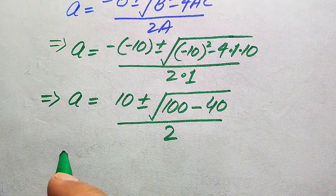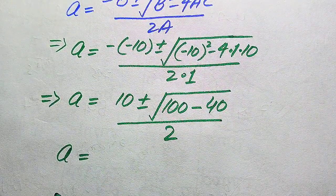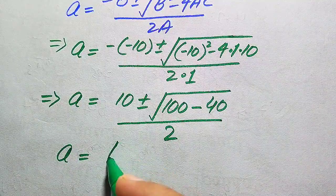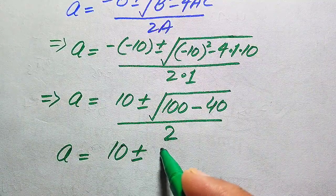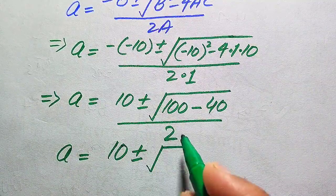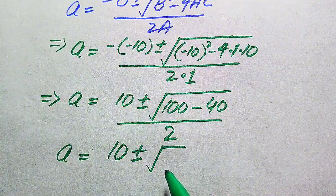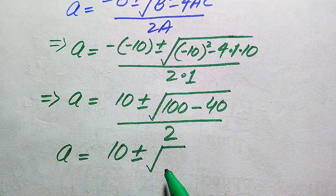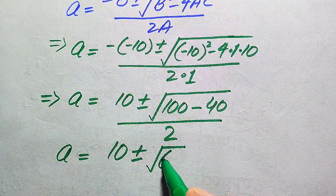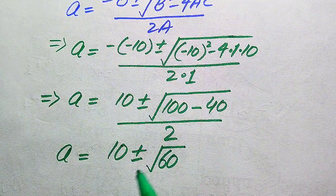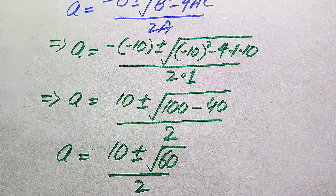Further simplification gives us: 10 plus or minus square root of 100 minus 40, divided by 2. We know that 100 minus 40 equals 60, so we have 10 plus or minus square root of 60, divided by 2.